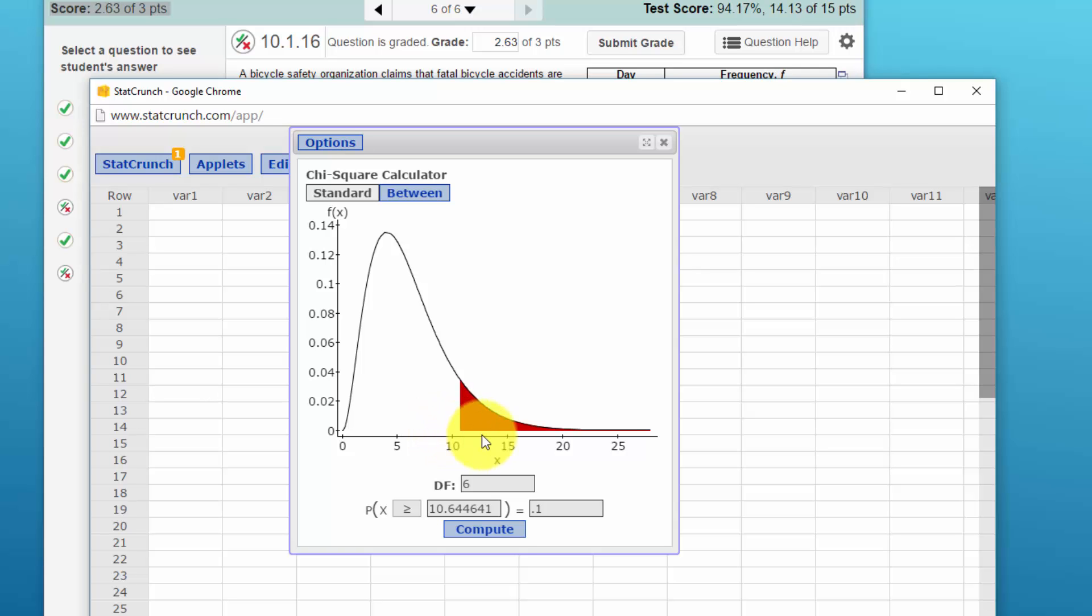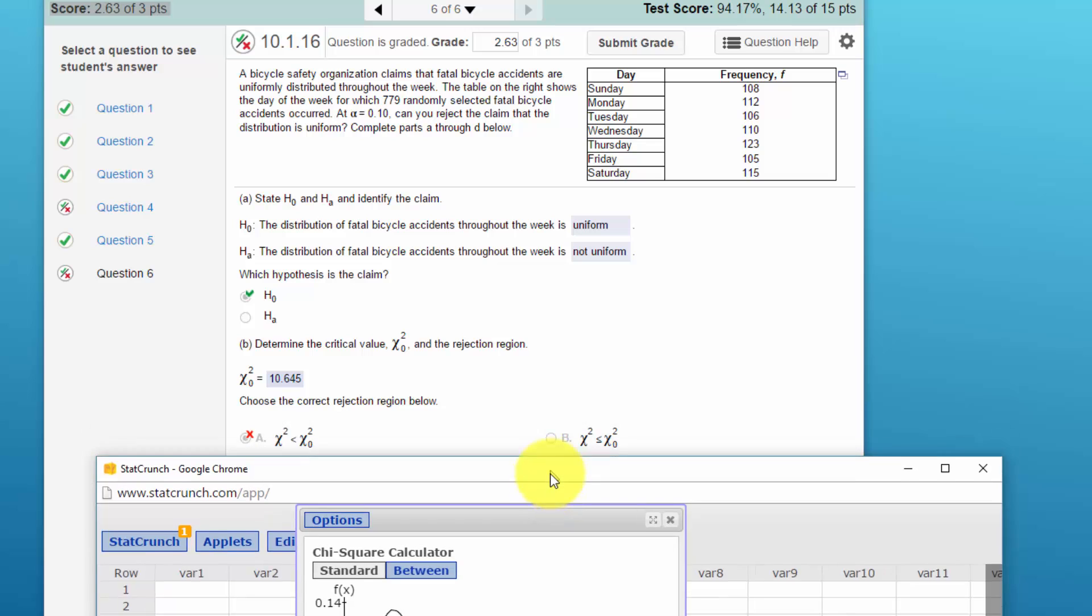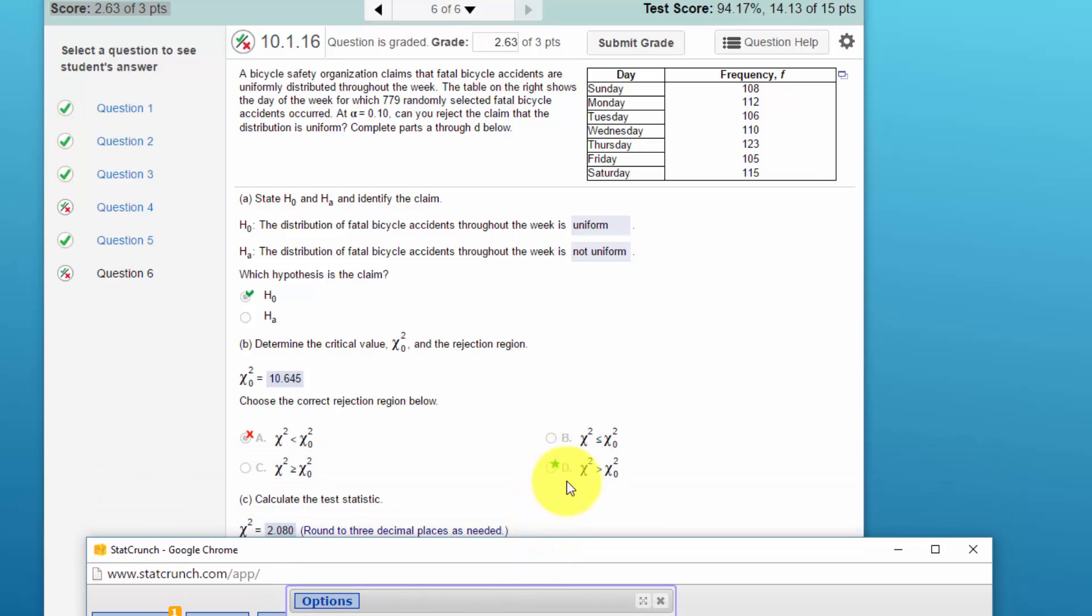So our rejection region is anything greater than ten point six four five and that is the correct answer here. And again, this person chose the left tail for some reason. Again, for test for independence, test for goodness of fit, it's always a right tail test.